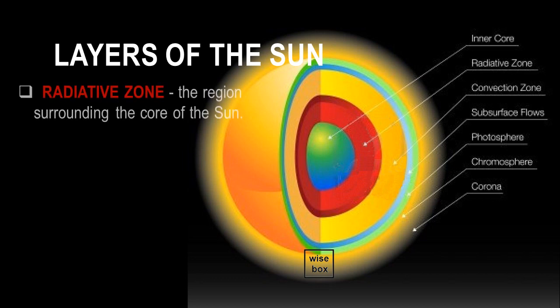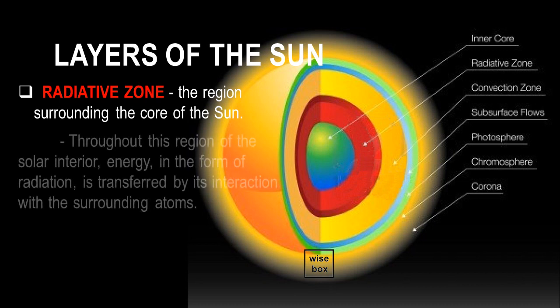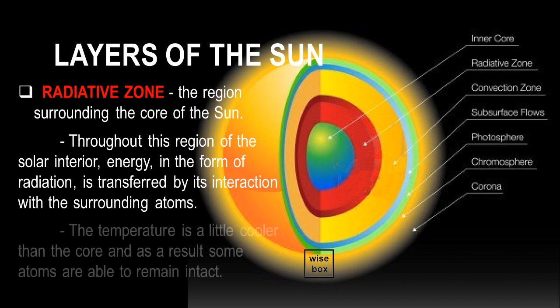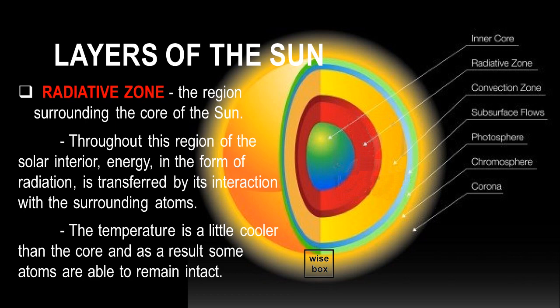The radiative zone is the region surrounding the core of the Sun. Throughout this region of the solar interior, energy in the form of radiation is transferred by its interaction with the surrounding atoms. The temperature in the radiative zone is a little cooler than the core, and as a result some atoms are able to remain intact.